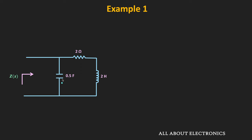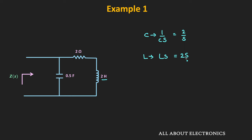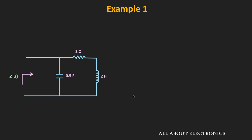For the capacitor, the equivalent S-domain representation is 1 divided by Cs, assuming all initial conditions are zero. Here C equals 0.5 Farads, so 1/Cs equals 2/S. For the inductor, the S-domain representation is Ls; with L equal to 2 H, that gives 2S. For the resistor, the equivalent representation remains the same — 2 Ohms. So the equivalent S-domain circuit now has these component values, and we can see the equivalent S-domain circuit.